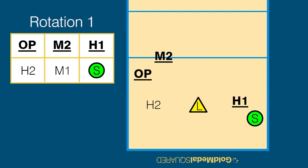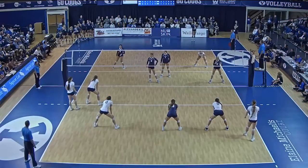When looking at overlap rules, this formation is legal as long as the setter remains behind the H1 until the ball is served. The opposite must be to the left of the M2 when the ball is served. Here is what it looks like.